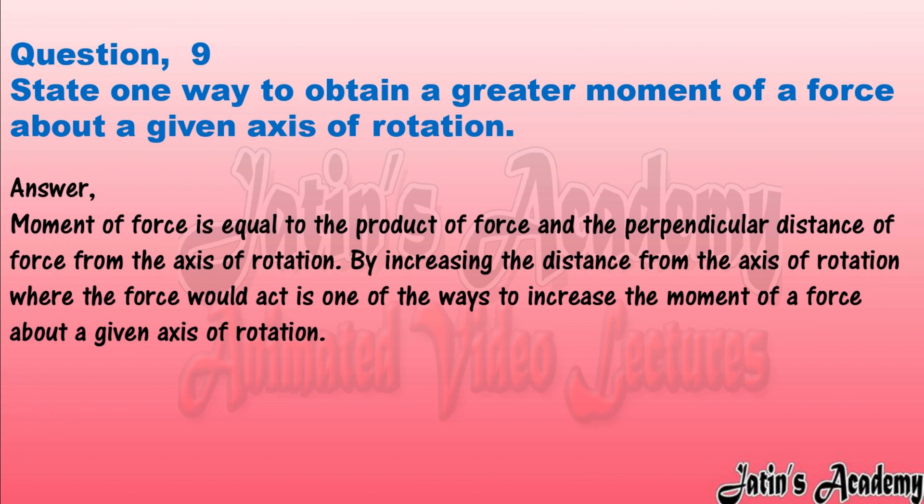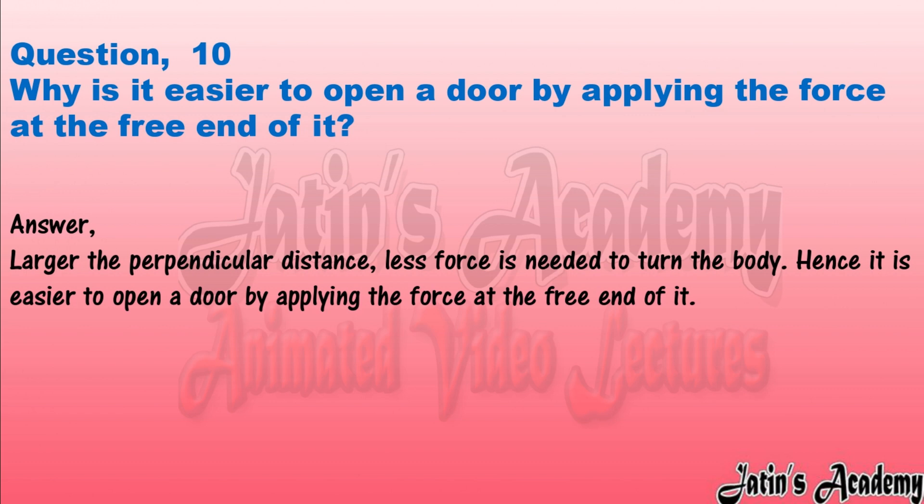Question nine: state one way to obtain a greater moment of a force about a given axis of rotation. Answer: moment of force is equal to the product of force and the perpendicular distance of force from the axis of rotation. By increasing the distance from the axis of rotation where the force acts is one way to increase the moment of a force about a given axis of rotation.